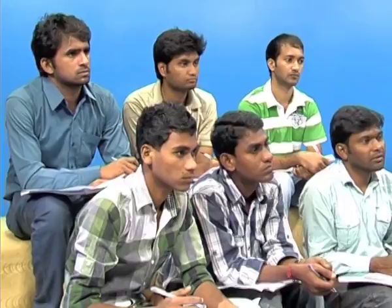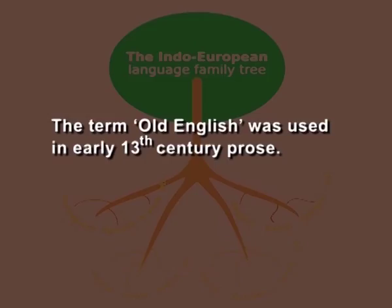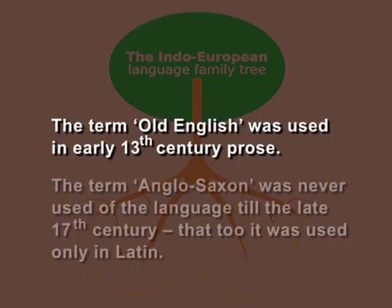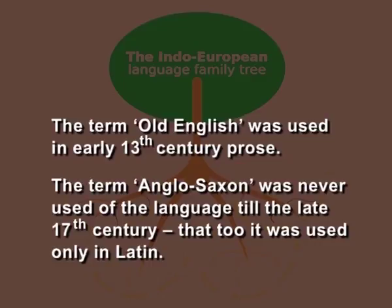Old English or Anglo-Saxon belongs to the Low German subdivision of the Germanic group of languages. It is derived from dialects spoken by the Germanic invaders of Romanized Britain. Early English was formerly called Anglo-Saxon, but sometimes the term Old English was also used. The term Old English was used in early 13th-century prose. The term Anglo-Saxon was never used of the language until the late 17th century, and even then only in Latin. Scholars referred to the language as Saxon until the 18th century. The inhabitants were called Anglo-Saxons by European writers to distinguish these English Saxon people from their kinsmen who had remained on the German mainland.